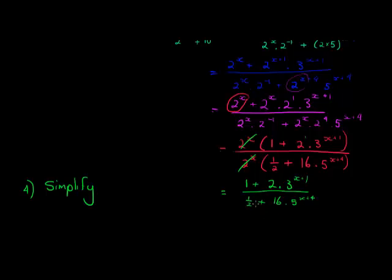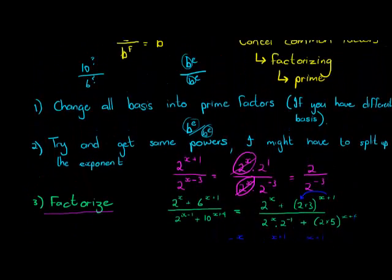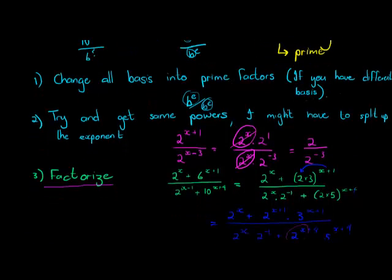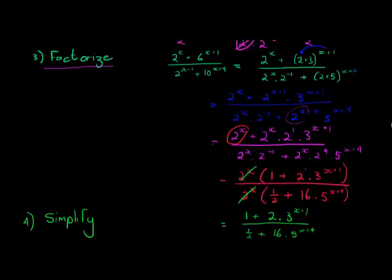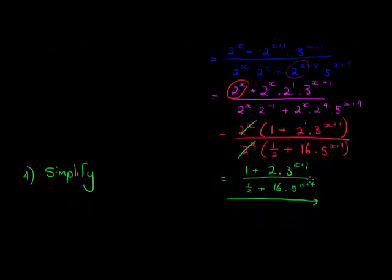That was actually a less-than-ideal example — usually these simplify to something like 1 or 2 — but it demonstrated the four steps well. To summarize: first, change bases into prime factors if the bases are different; second, get the same powers by breaking up the exponents; third, factorize when there are multiple terms with pluses and minuses; and fourth, simplify by cancelling the common factors. You're usually left with a very simple answer. I'll see you in the next couple of videos.